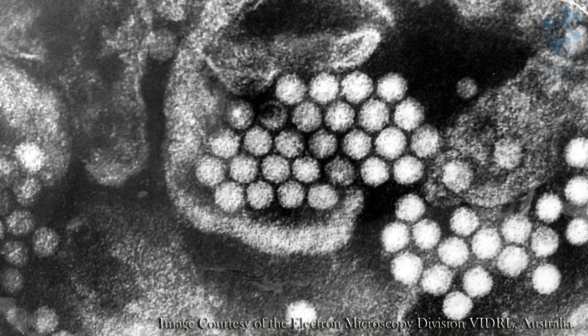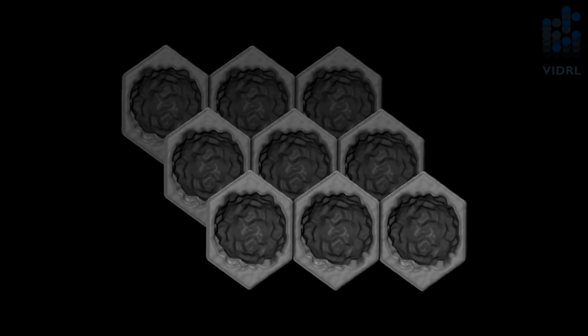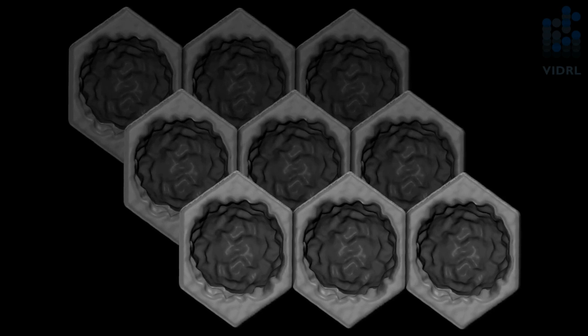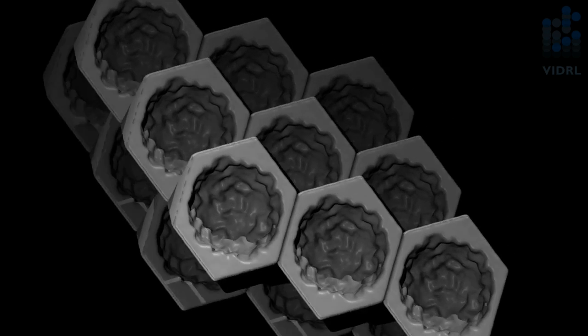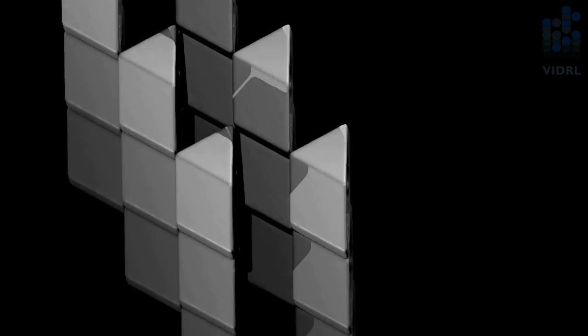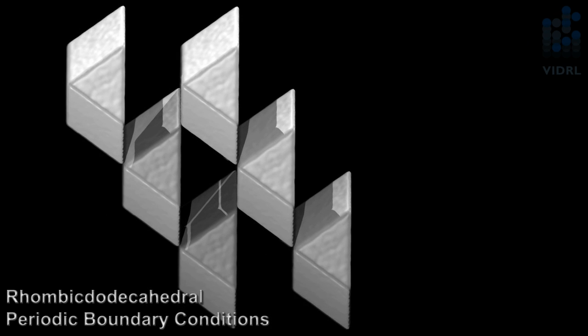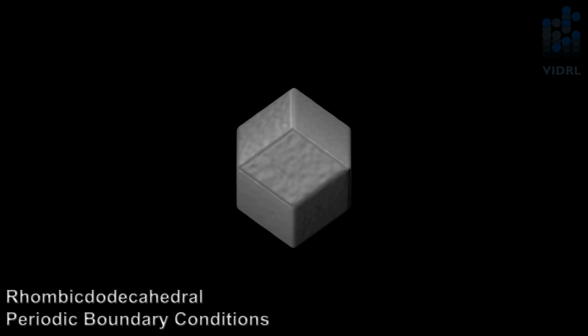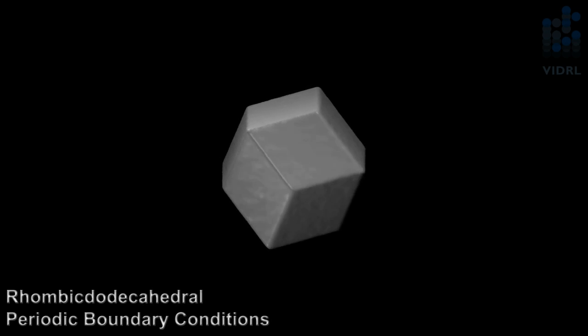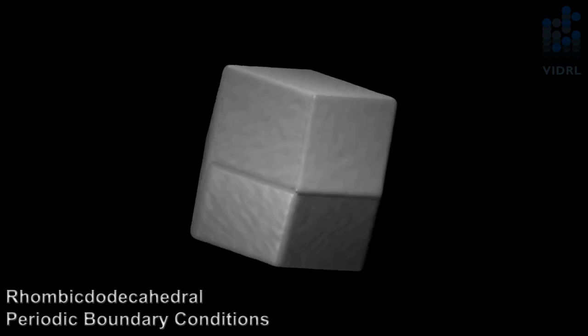In order to replicate the biological environment of the virus as naturally as possible, we use a method that is similar in effect to a hall of mirrors. With this effect, any atom that leaves one side of the periodic cell will come back through on the opposite side of that cell. This is especially important for replicating large biological systems.